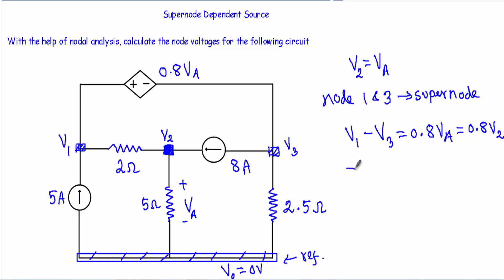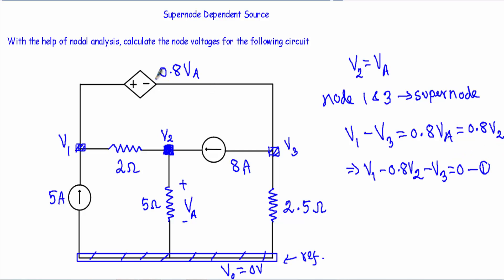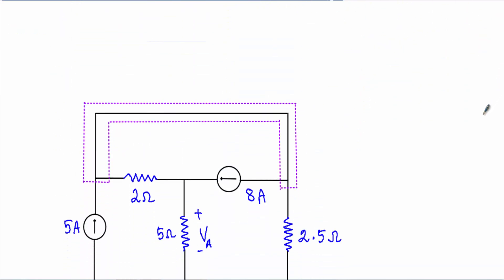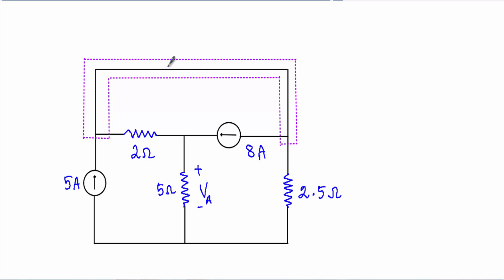Since VA equals V2, I can write 0.8 V2. Taking all quantities to one side: V1 minus 0.8 V2 minus V3 equals 0. This will be our equation number 1. After that I will mentally remove this voltage source and replace it with a short circuit to indicate our super node.